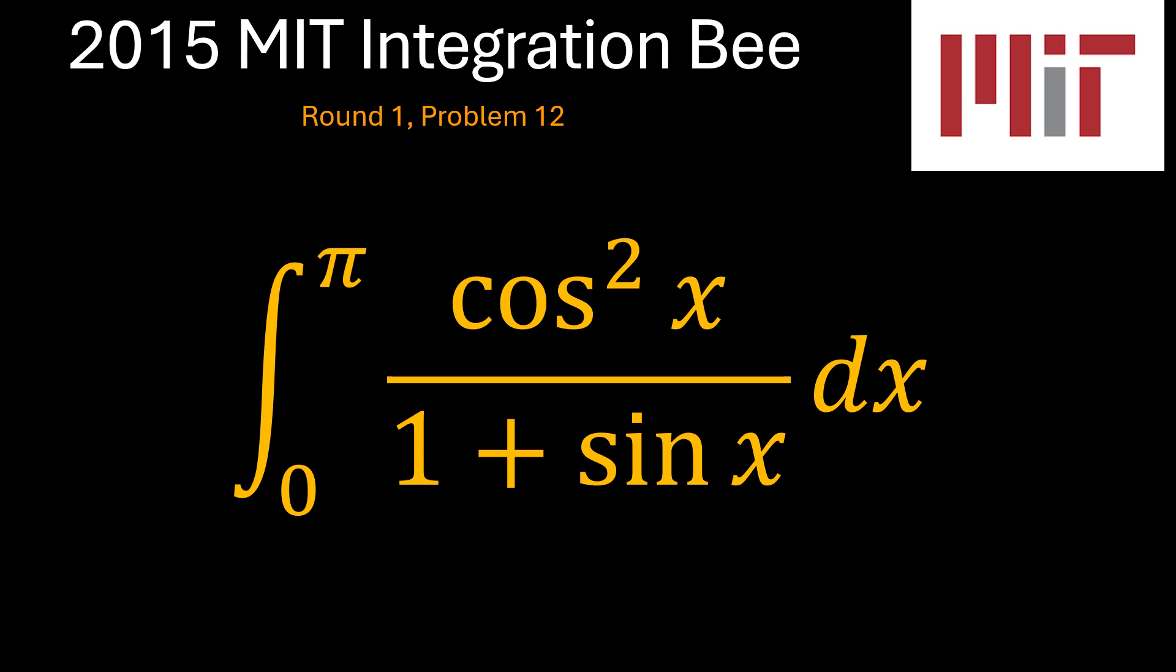Interesting problem, let's see how we may be able to solve it. There are two ways I may be able to solve it. First is either to express cosine squared x as 1 minus sine squared x, then using the difference of two squares, or I could multiply both the numerator and denominator by 1 minus sine x. So I choose to use the latter.